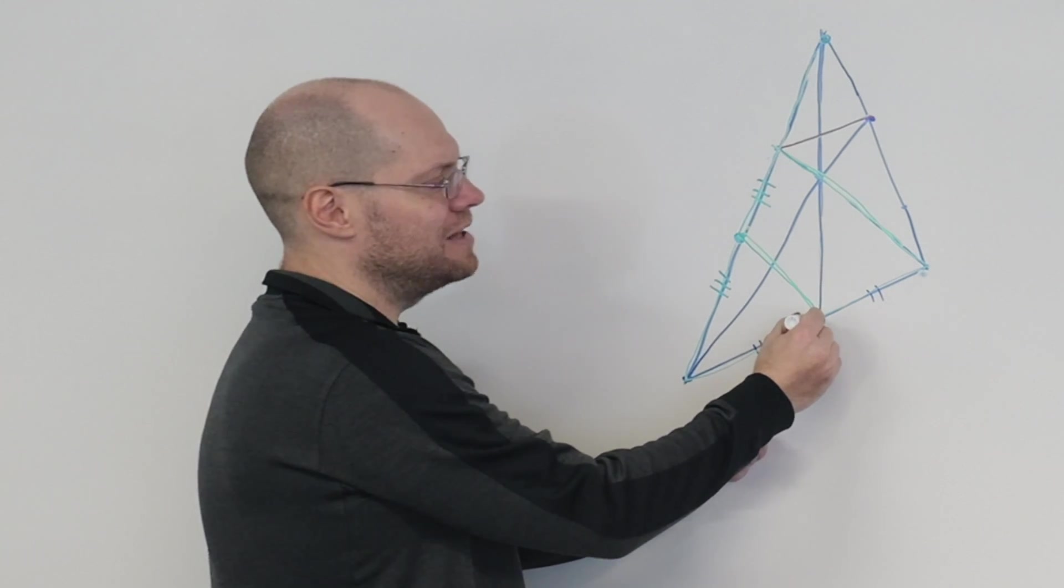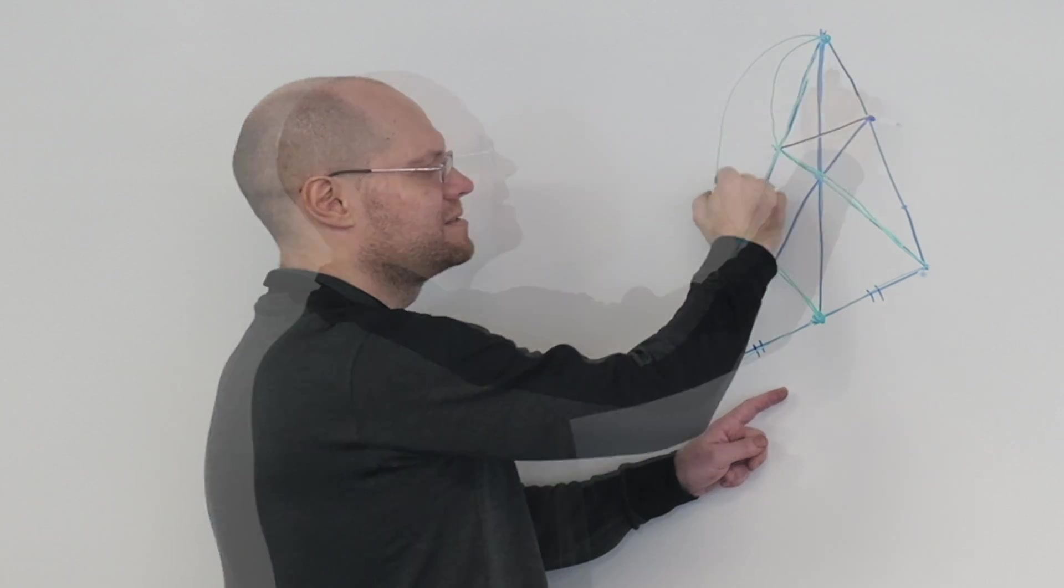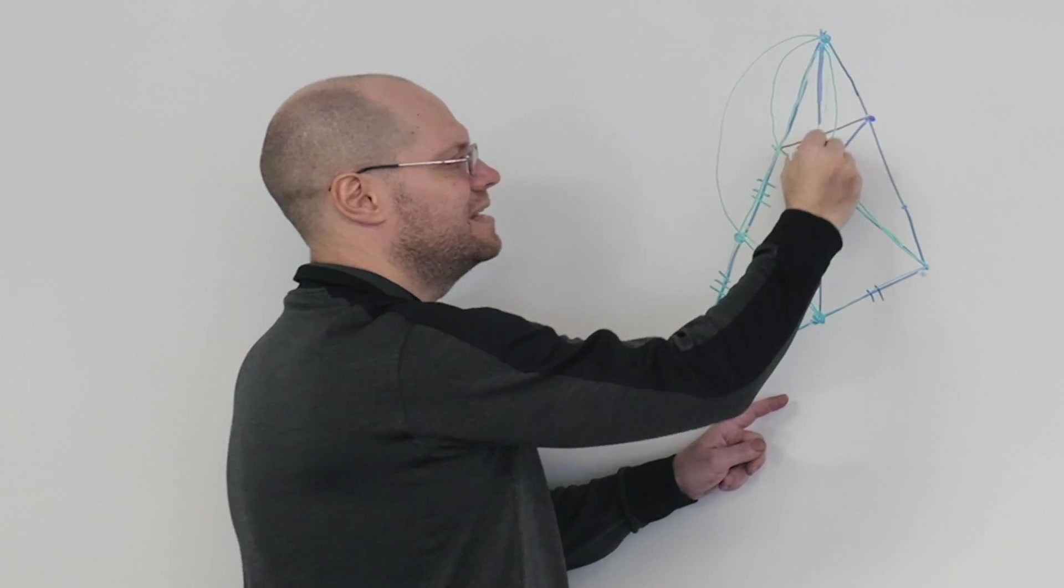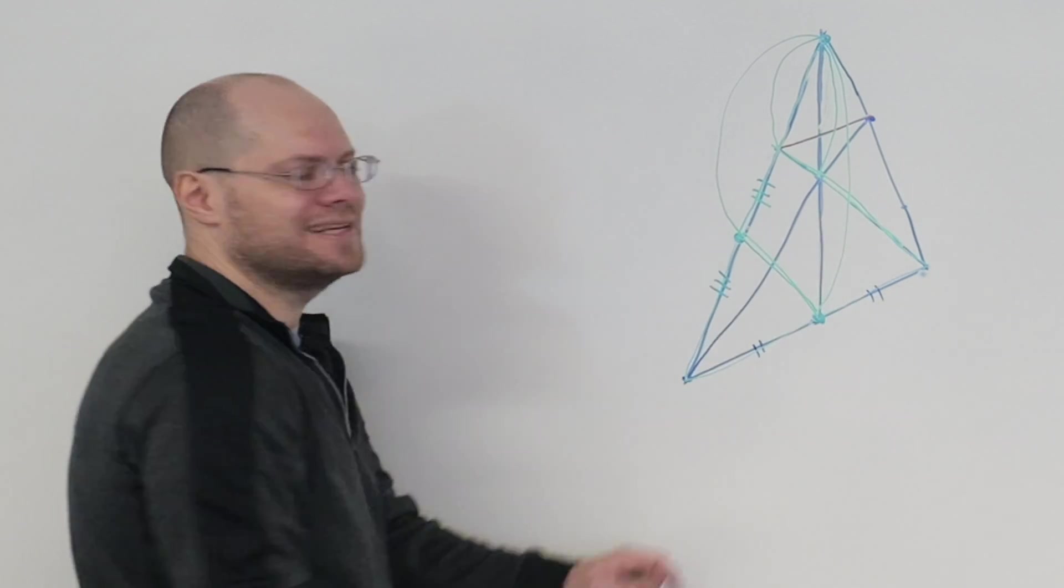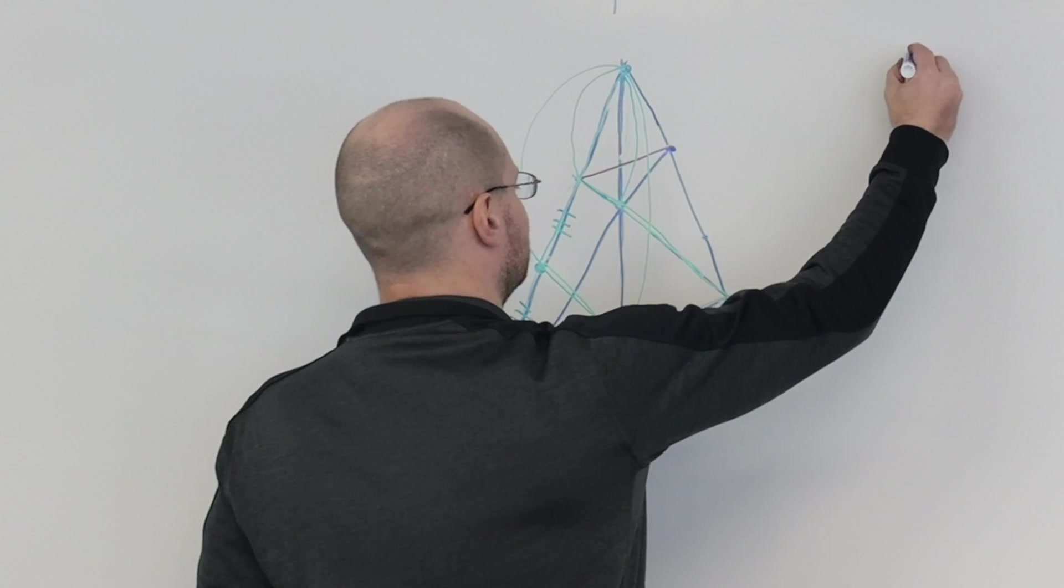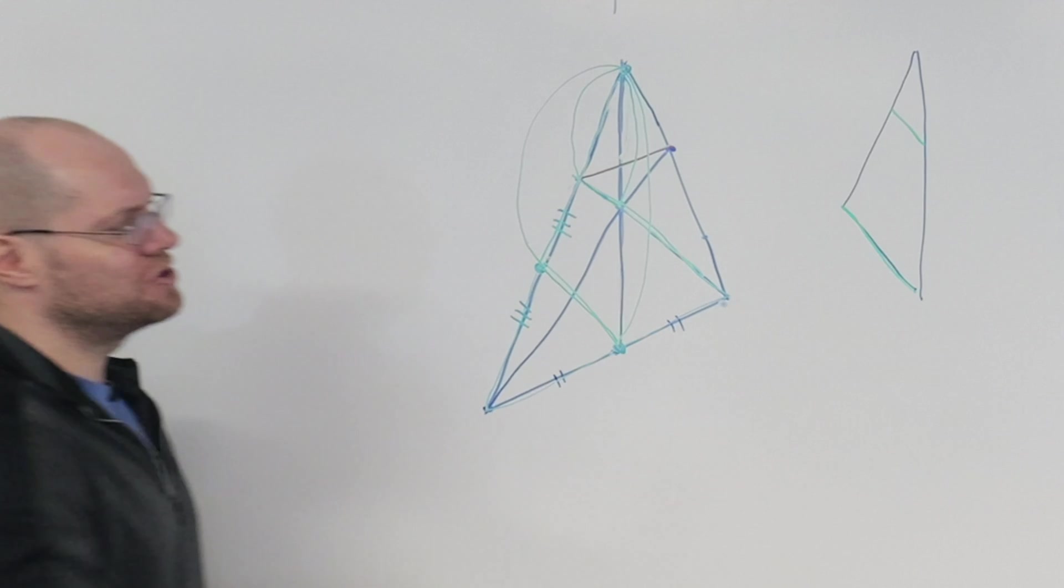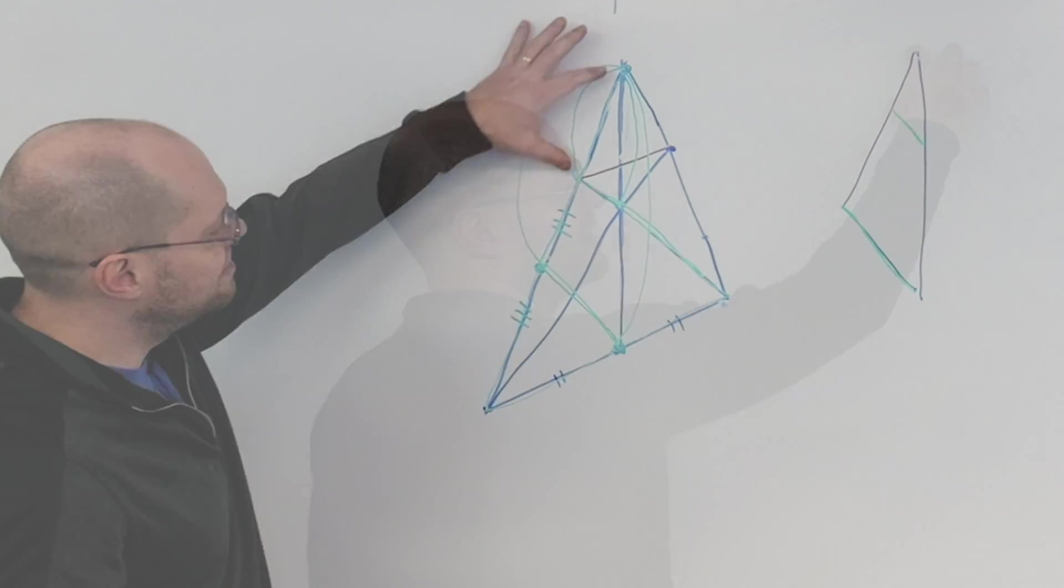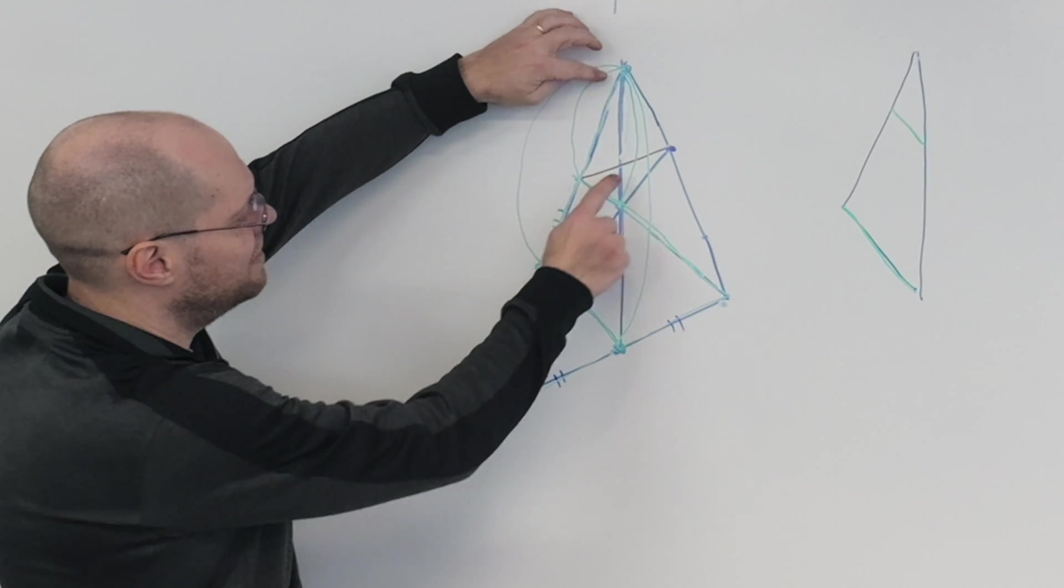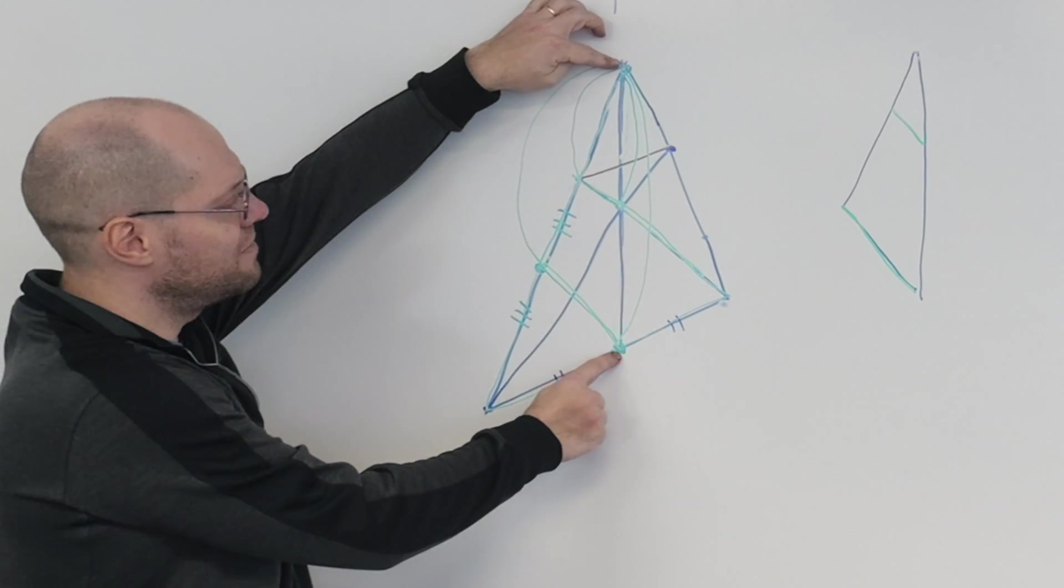So we can make the following statement: that this over this equals this over this. Am I right? If I break this triangle out. Okay, and so the statement that I'm making is that this over this equals this over this. Right.